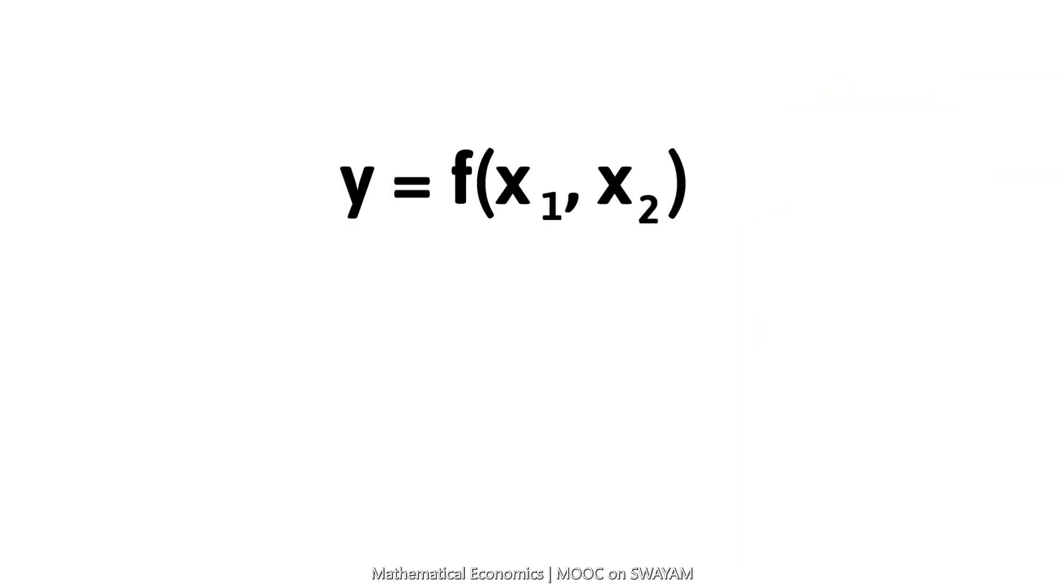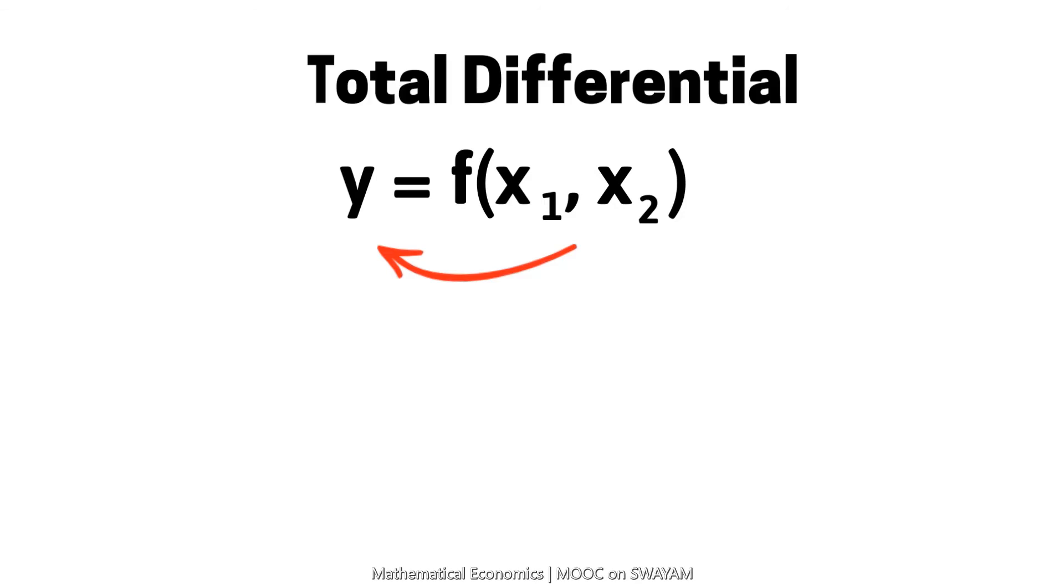In the previous function, if we wish to find the total effect of x1 and x2 on y, then in mathematical language, we actually want to find out the total differential of the function. The process of finding the total differential is called total differentiation. Mathematically, total differential is given by dy.